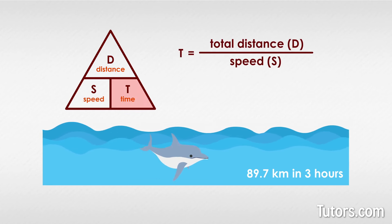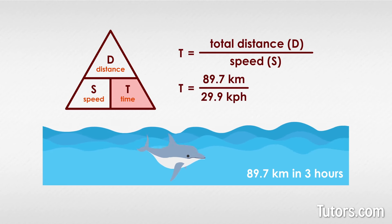you must have the distance and speed. You plug those two scalar quantities into their parts of the triangle to get T equals 99.7 kilometers divided by 99.9 kilometers per hour, which equals 3 hours.